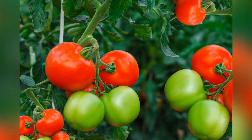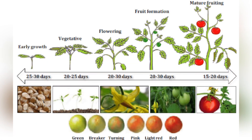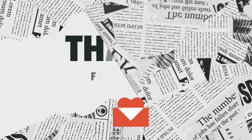This cyclical process ensures the continuation of tomato plants, with seeds from mature fruits capable of germinating and starting the life cycle anew.